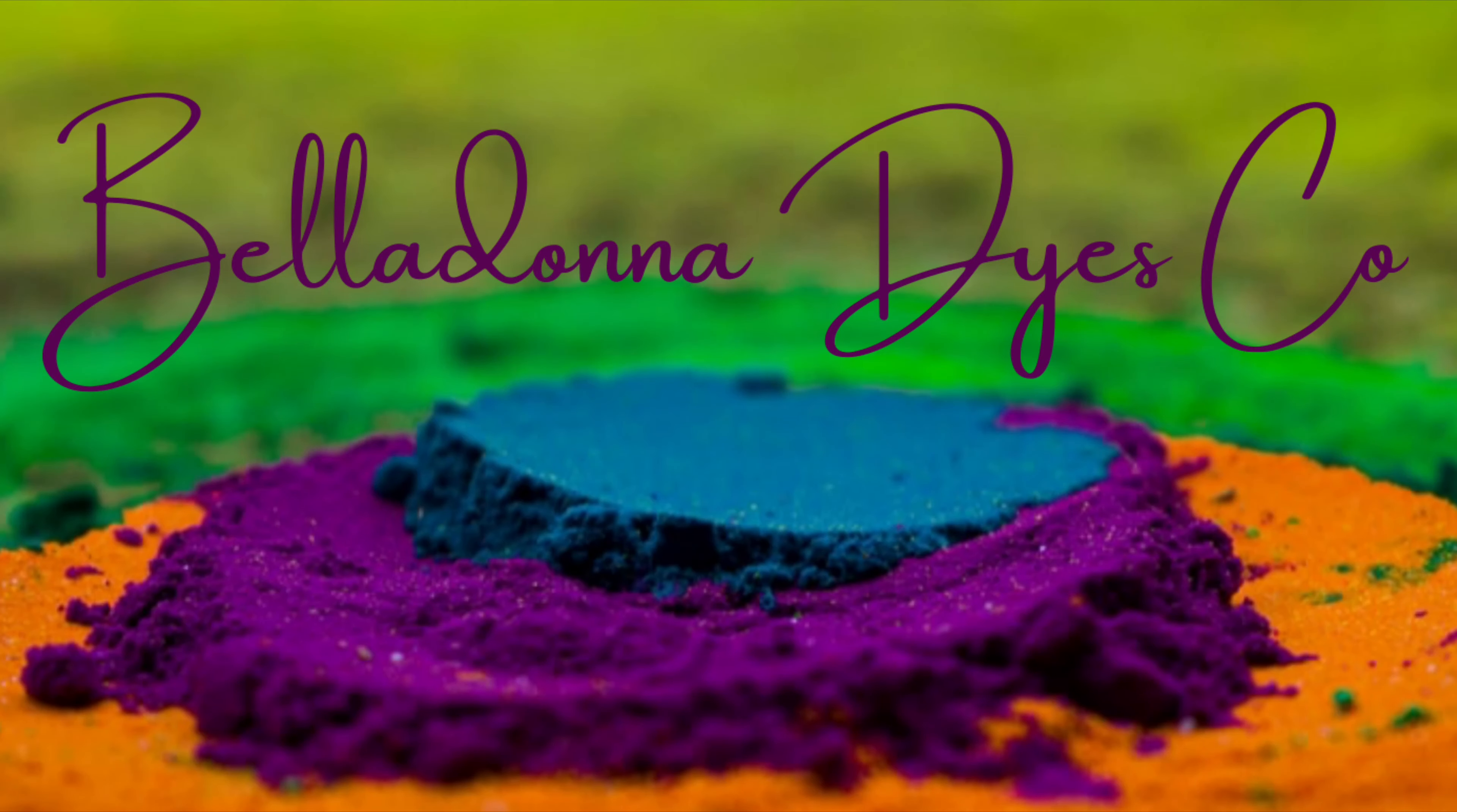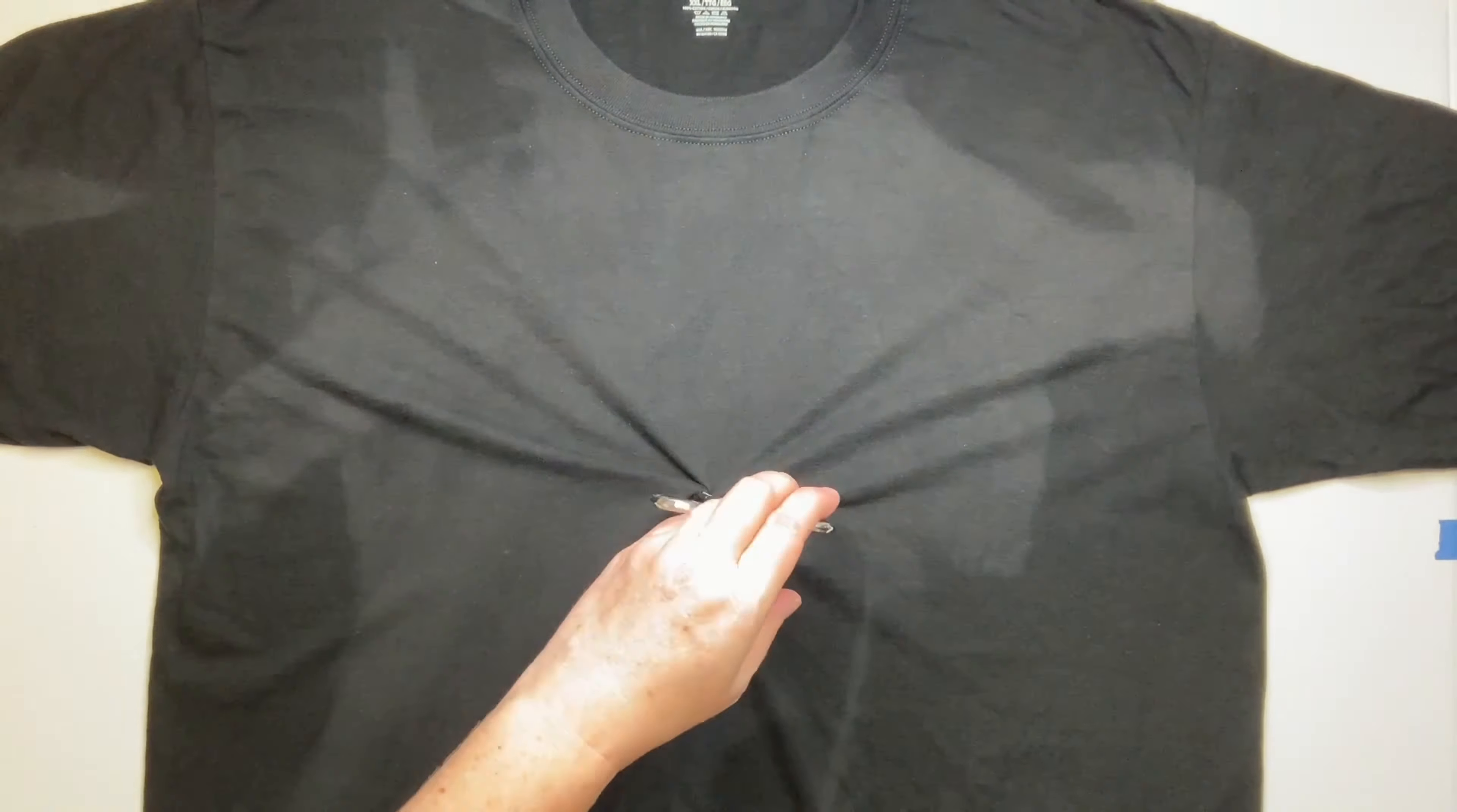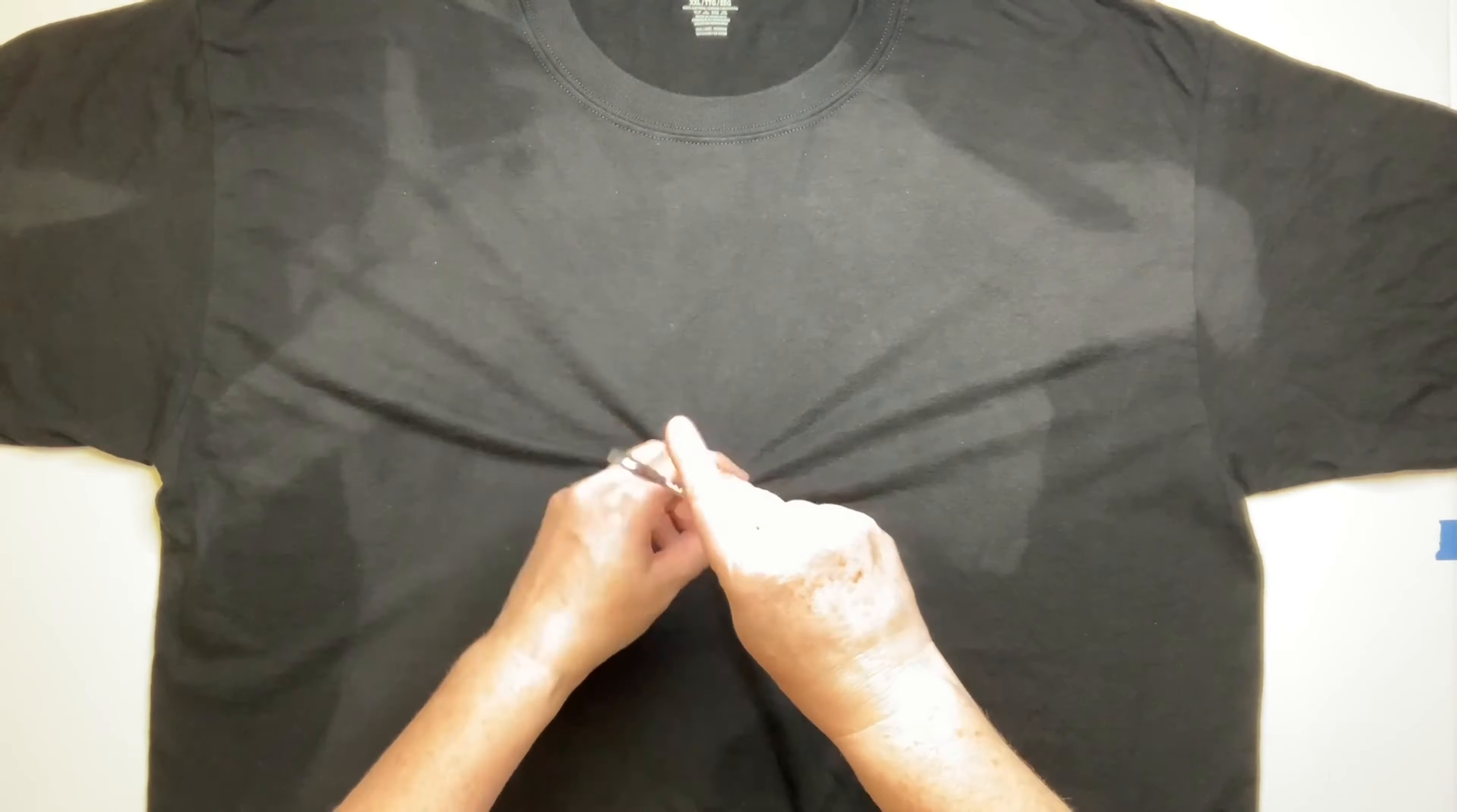Hi, this is Steph with Belladonna Dyes, and today we're going to make a reverse spiral. For this project we're starting off with a black t-shirt. I washed it in a hot water cycle with some Synthrapol and it's damp from the washing machine.